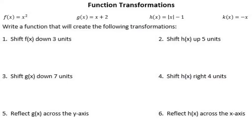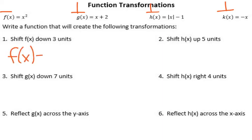It says write a function that will create the following transformations, and we're given four different functions: f of x, g of x, h of x, k of x. Number one says shift f of x down three units. So we've got f of x equals x squared, and to shift it down we just subtract three.